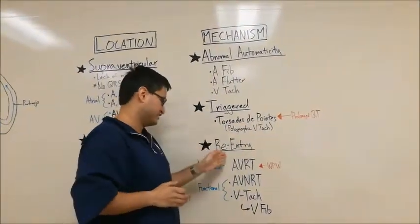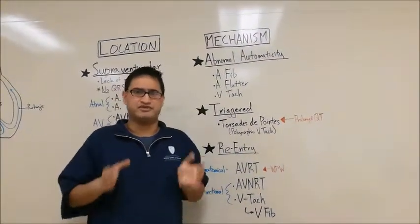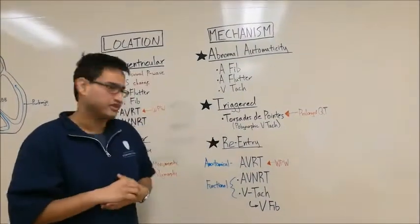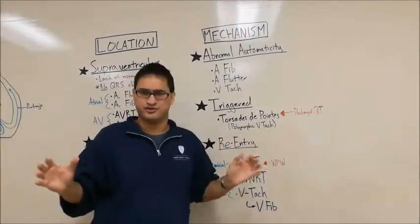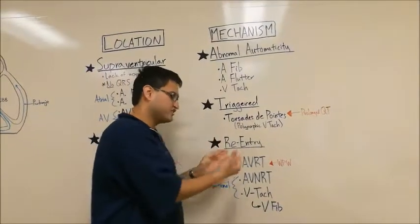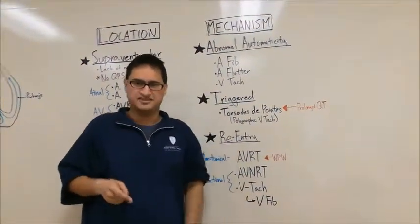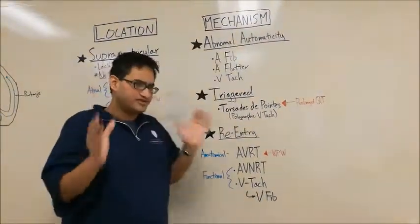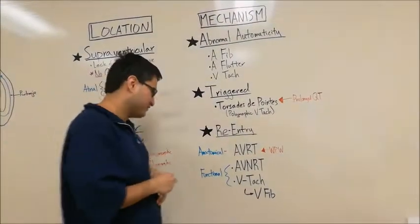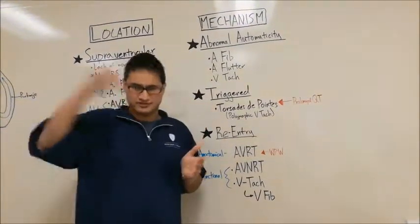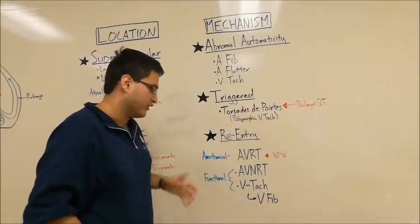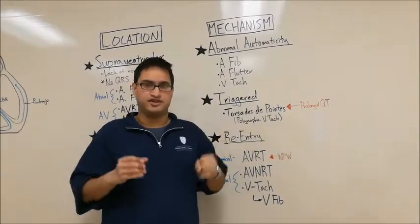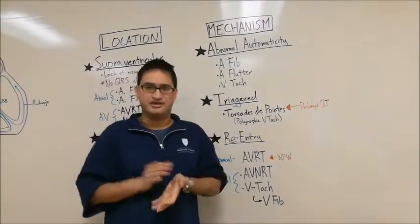Lastly, let's talk about re-entry tachycardias. So there are a lot of videos that explain re-entry very well with really cool animations, and I don't have the ability to do that right now. So I'm just going to try to classify re-entry for you. In general, in order to have re-entry, you need to have a loop. And the idea is that the impulse travels around this loop very, very fast. Now there's two ways this loop can emerge. Either there can be a physical anatomical loop with several pathways, or there can be a functional loop where there is tissue heterogeneity, meaning some tissue next to the other tissue is just faster at conducting for whatever reason, and you have a difference in conduction speed.